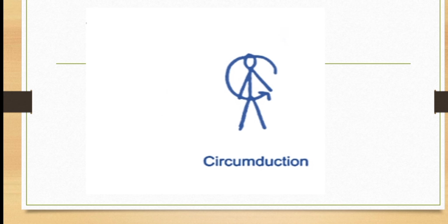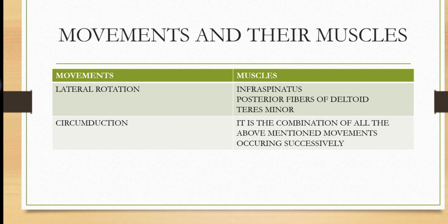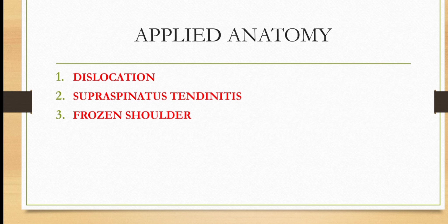In applied anatomy of the shoulder joint: First, dislocation — the shoulder is more prone to dislocation than any other joint due to laxity of the capsule. Dislocation usually occurs when the arm is abducted and may damage the axillary nerve. Second, supraspinatus tendonitis may cause severe pain between 60 to 120 degrees of shoulder abduction, where the tendon impinges against the overlying acromion. Third, in frozen shoulder, the two layers of the synovial membrane adhere to each other, causing severe pain, stiffness, and restriction of movements.